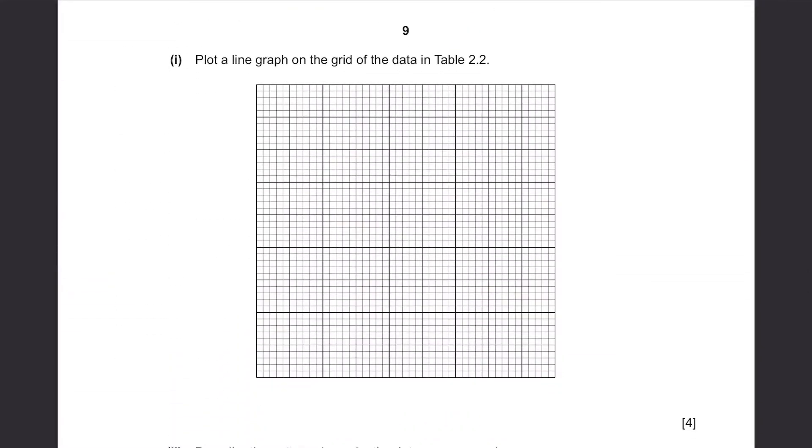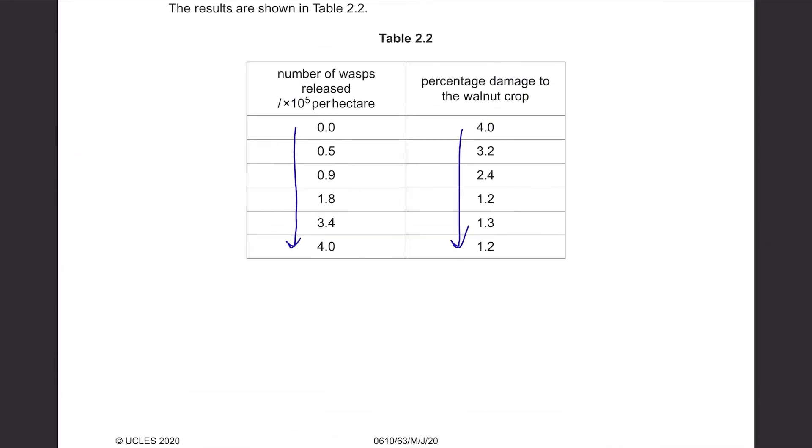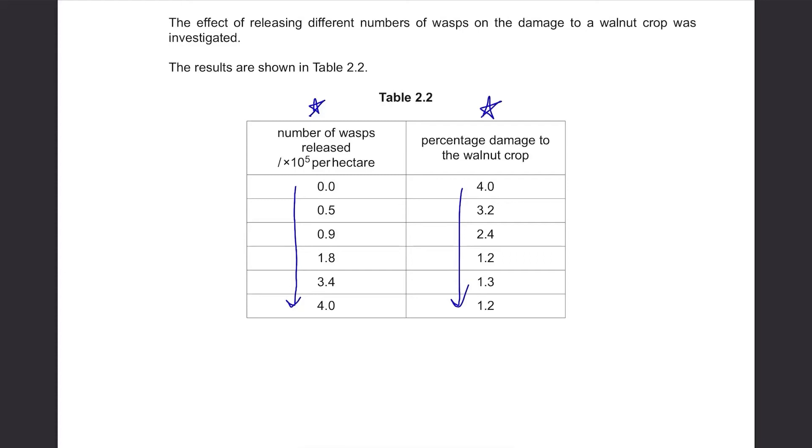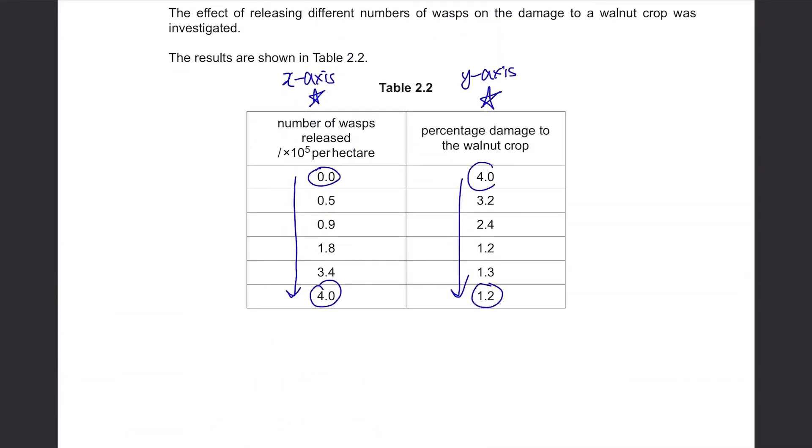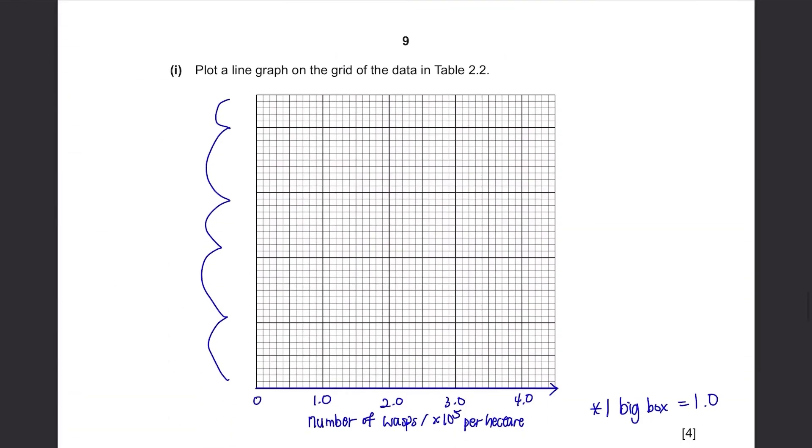Plot a line graph on the grid of the data in table 2.2. So first, we have to decide what's gonna be on the x-axis and what's gonna be on the y-axis. x-axis is the independent variable which is controlled by us. We're controlling the number of wasps. So this will be the x-axis and percentage damage will be the y-axis. So for x-axis, it's from 0.0 to 4.0. And there are 1, 2, 3, 4.5 big boxes. Then we can allocate 1 big box as 1.0. So that our range is from 0 to 4.5. This is our x-axis. And y-axis has 1, 2, 3, 4.5 big boxes. And the range is from 1.2 to 4.0. Then again, this can also have 1 big box as 1.0. Now it's complete, so plot the points and draw the graph.